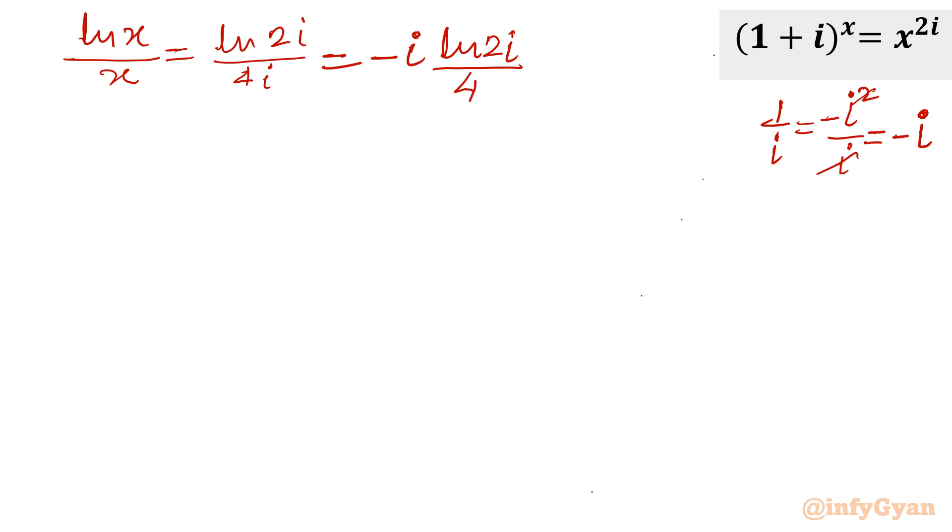Now we can think about Lambert W function or if you want to simplify further more, we can simplify this one. Let me show you how it would be ln 2i. Let me consider 4i, we will divide at last. Now ln 2i, ln a plus ln b, so I will write ln 2 plus ln i divided by 4i.